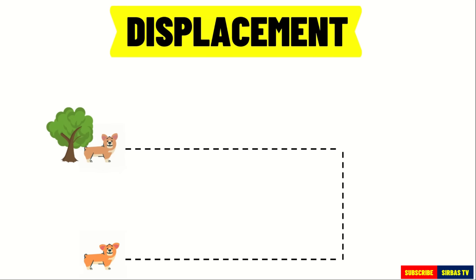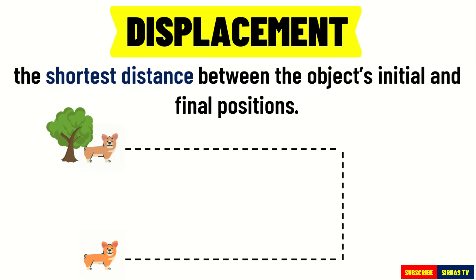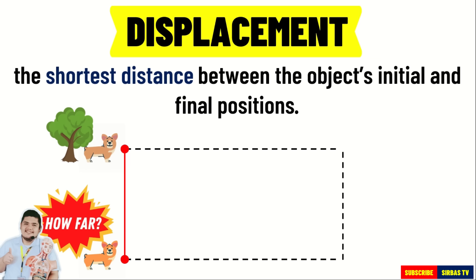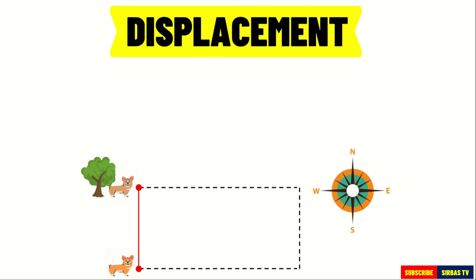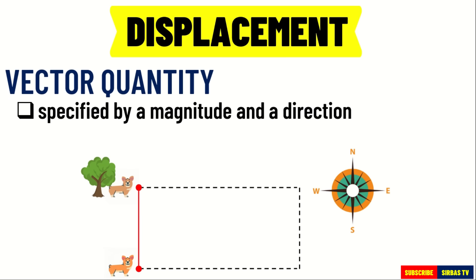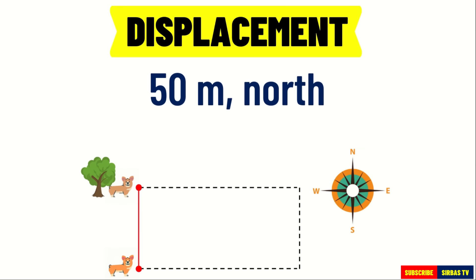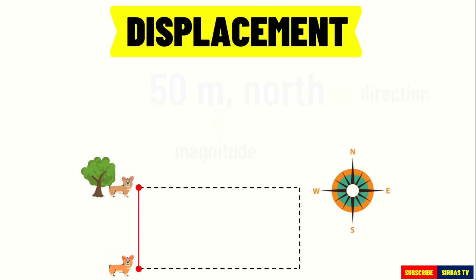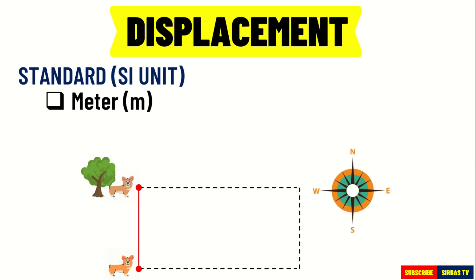Let us now talk about displacement. Displacement is the shortest distance between the object's initial position and final position. It is the straight distance from the initial position to the final position. It gives us an idea of how far the body is from its starting point and in which direction. It is a vector quantity. Unlike scalar, vector quantity is described by both a magnitude and a direction. For example, 50 meters north — 50 meters is the magnitude and north is the direction. Just like distance, the standard unit of displacement in the international system of units is meter.